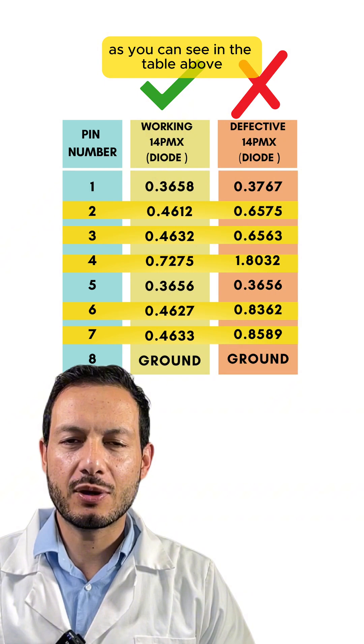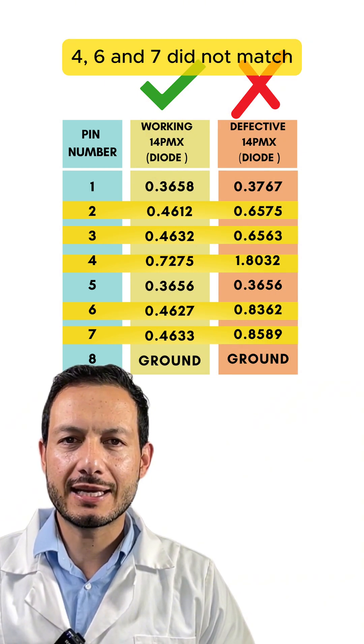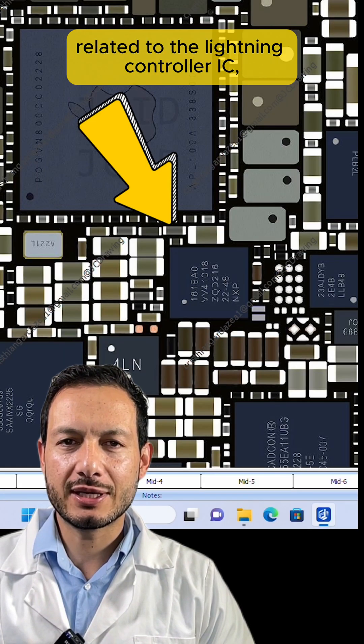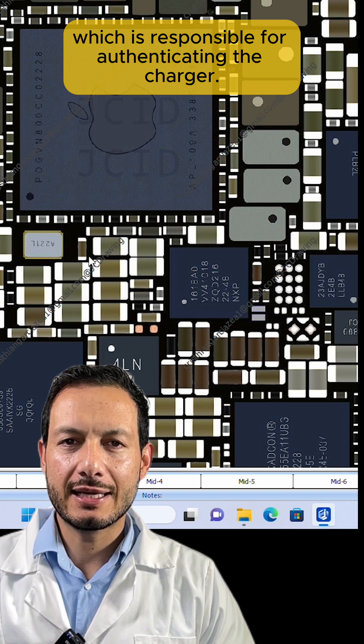As you can see in the table above, the readings for pins 2, 3, 4, 6, and 7 did not match, indicating an issue related to the lightning controller IC, which is responsible for authenticating the charger.